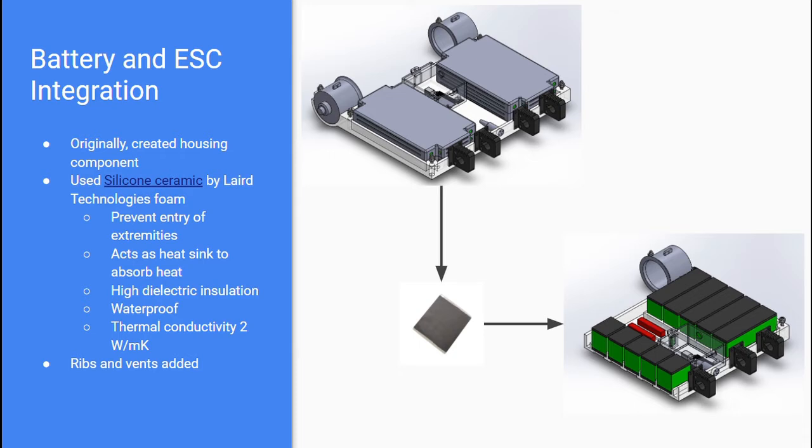The battery and ESC were originally going to be contained in a separate housing component to keep them in place. However, we removed the housing since it prevented the removal of heat from the batteries and instead used the silicone ceramic by Laird Technologies. The product we concluded would meet our design specifications for the battery foam was the T-Flex B200, a reliable, compliant thermal material offering good thermal performance. It has high dielectric insulation, which works to prevent dielectric breakdown, and is made of ceramic-filled silicone, a waterproof material. Placing this material in between the vents and battery allows us to properly vent the heat from the batteries while keeping unwanted water, dirt, and oils outside. The foam has a tacky side used to attach the battery, ESC, and the chassis to hold them together structurally.